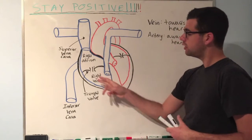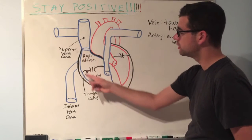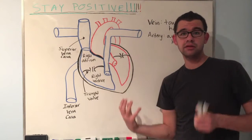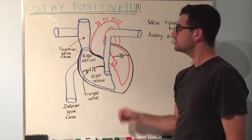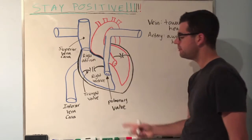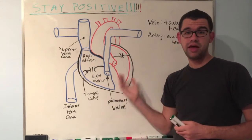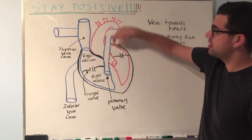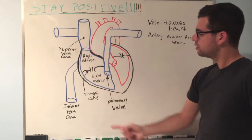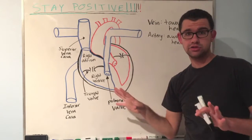Now we have our blood in the right ventricle, still deoxygenated, still at a very low concentration of oxygen. The next step is to get the blood to the lungs. But to get to the lungs, it must first pass through another valve called the pulmonary valve. Just like the tricuspid valve, its purpose is to prevent backflow — you don't want blood going from the pulmonary trunk back into the right ventricle. So blood travels right ventricle through the pulmonary valve, up through this structure, and splits to go to both lungs.